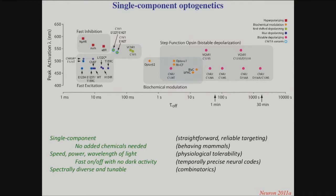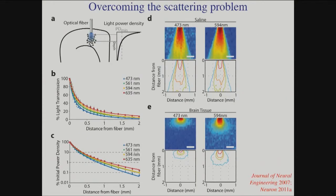These opsins are from biology, so they use well-tolerated wavelengths and intensities of light. They're very fast, capitalizing on millions of years of evolution — nature's built these to be low noise, low dark activity, fast responses, and with big spectral diversity. The first question is how do you get light in, and the answer is you can use fiber optics.